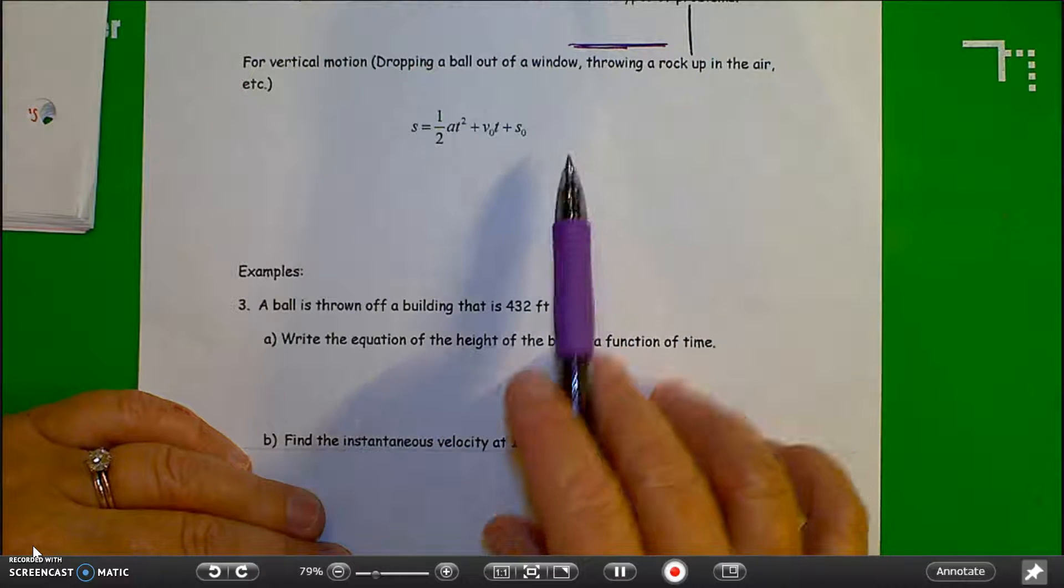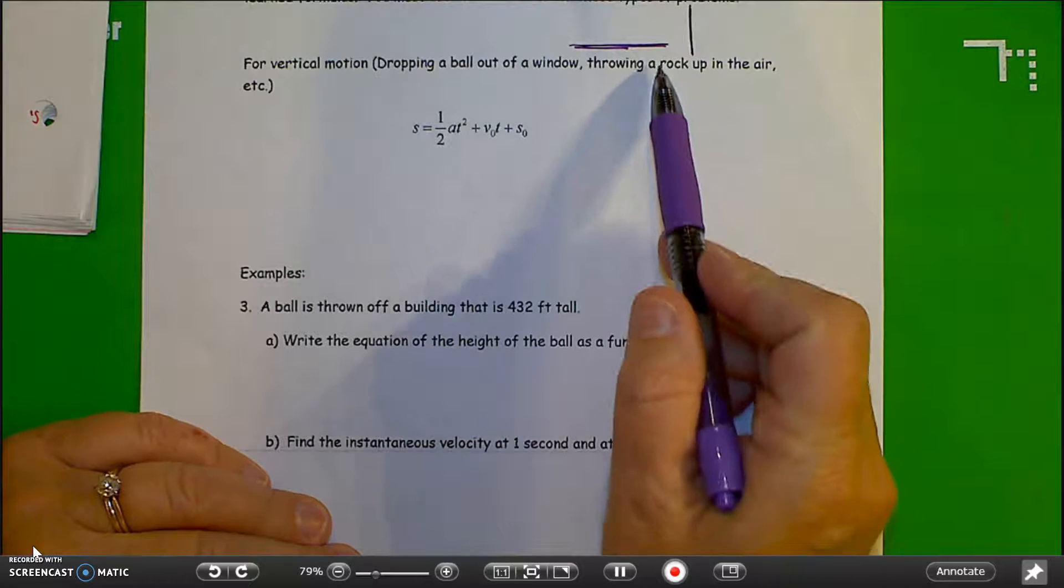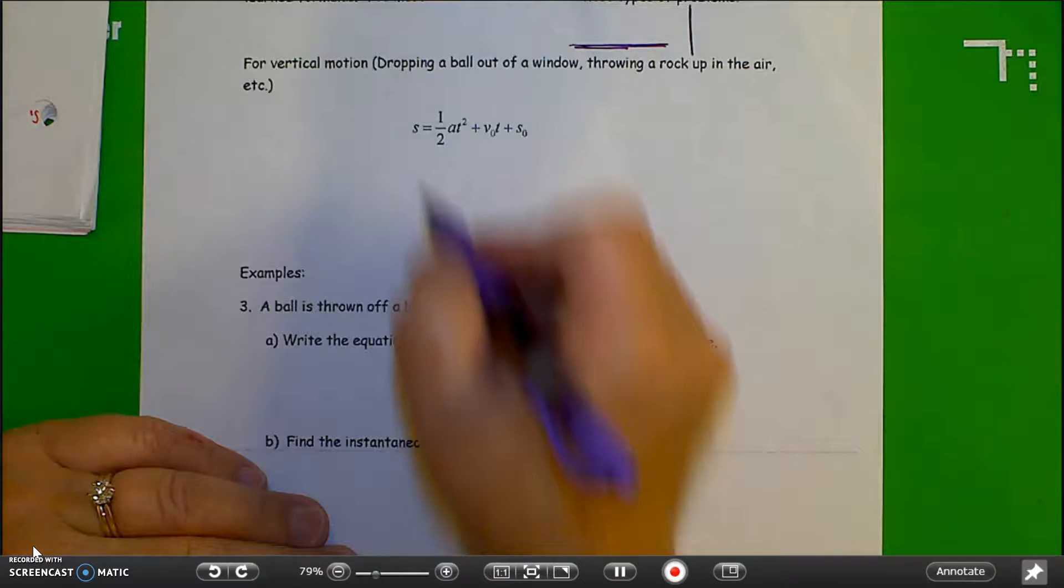Examples would be dropping a ball out of a window, throwing a rock up in the air, it would be straight up in the air, it would go straight up and come straight down. So we're going to use this format for our position function.